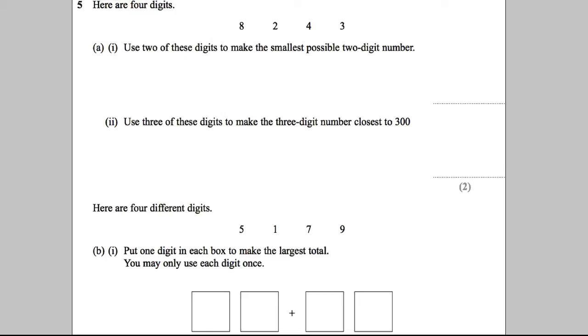Question five. So get our highlighter out. Here are four digits. We've got an 8, a 2, a 4 and a 3.